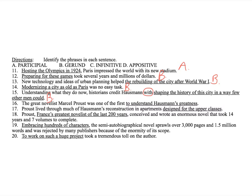The great novelist Marcel Proust was one of the first to understand Hausmann's greatness. As soon as you see to plus a verb form, you know that's an infinitive. Right? To understand is an infinitive. And then Hausmann's greatness goes along with that. It completes the meaning. Proust lived through much of Hausmann's reconstruction in apartments designed for the upper classes. Now, here you have the ed form of the verb. Notice how it's designed. Not designing. Designed. When you see the ed form of a verb, you know you're dealing with a participle. Right? Designed for the upper classes describes the apartments. What kind of apartments are there? They are apartments designed for the upper classes.